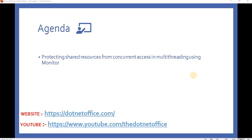Welcome back to multi-threading programming in C#. In this video we will cover how to protect our shared resource from concurrent access in multi-threading using the Monitor class. In the previous video we discussed how to protect shared resources using the Lock class. Similarly, we will protect it using the Monitor class. Both the Monitor class and Lock provide a mechanism that synchronizes access to an object. Lock is basically a shortcut for the Monitor class, which uses Monitor.Enter with a try/catch and finally block.